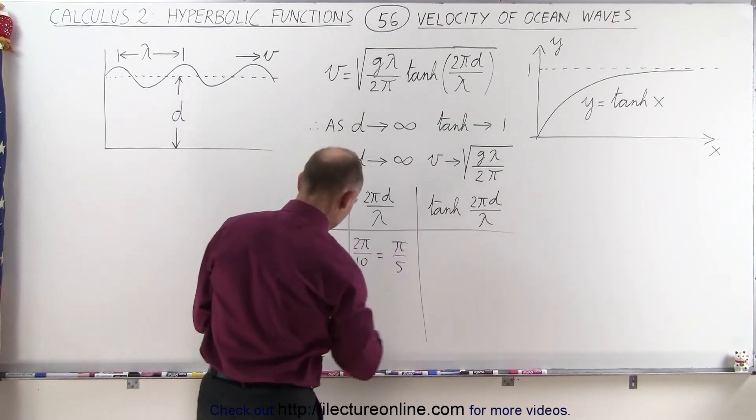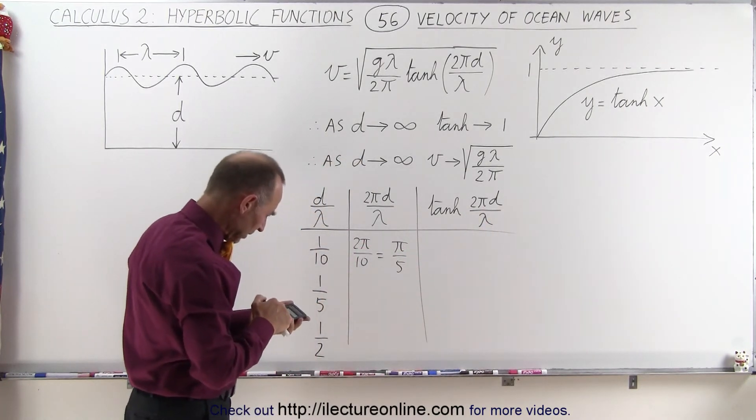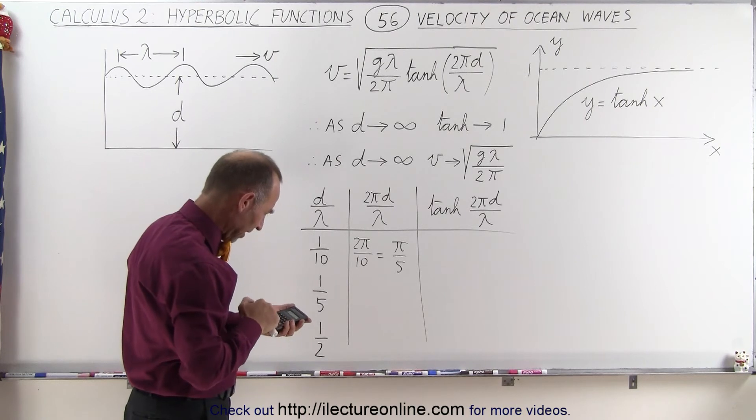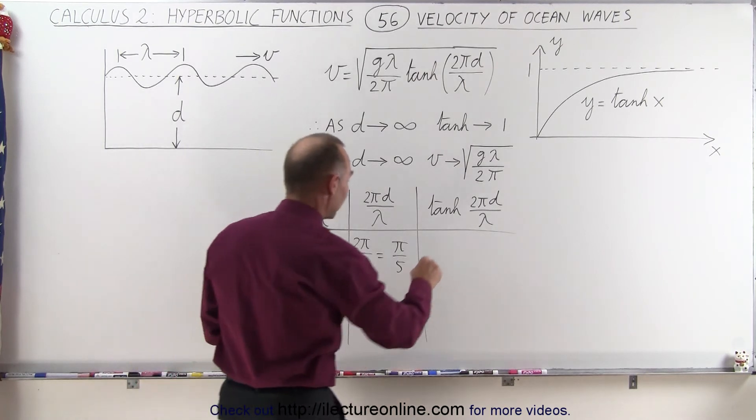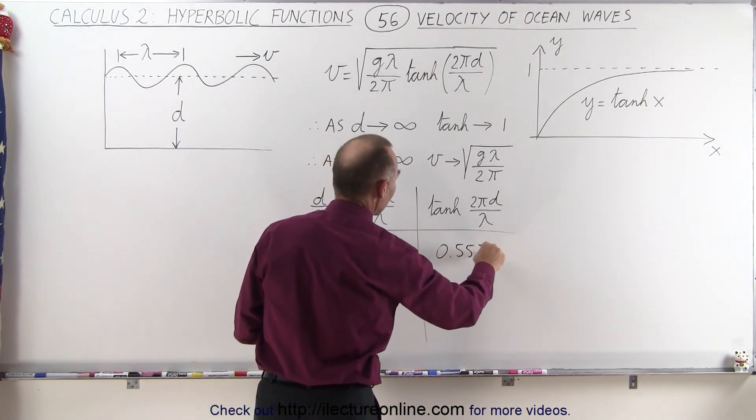And if we plug that in here, let's see what we get. So we take π divided by 5, take the hyperbolic tangent of that, and that will be equal to 0.557.